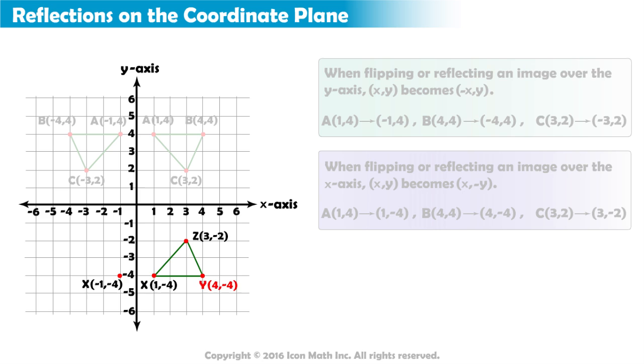Point Y(4, negative 4) must also be four places away from the y-axis. The new point is located at negative 4, negative 4.